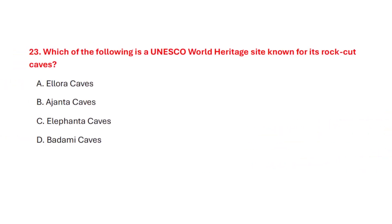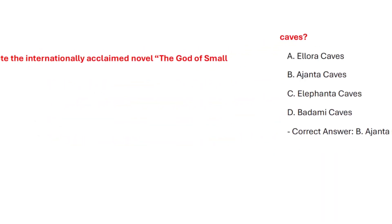Question 24. Which of the following is the UNESCO World Heritage Site known for its rock-cut caves? Correct answer is option B: Ajanta Caves.